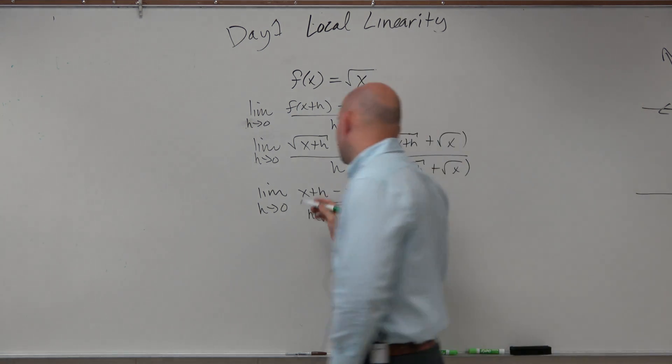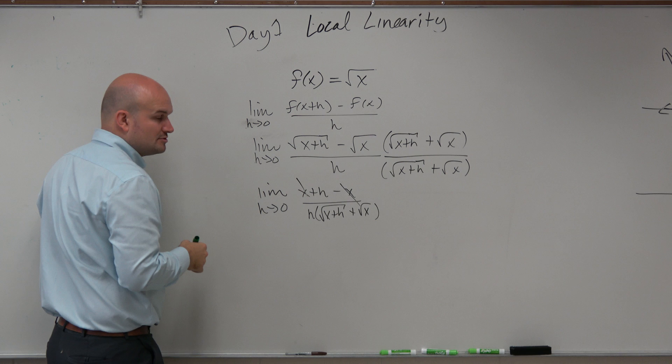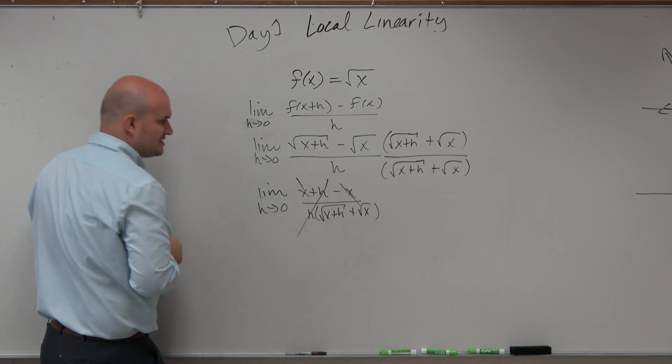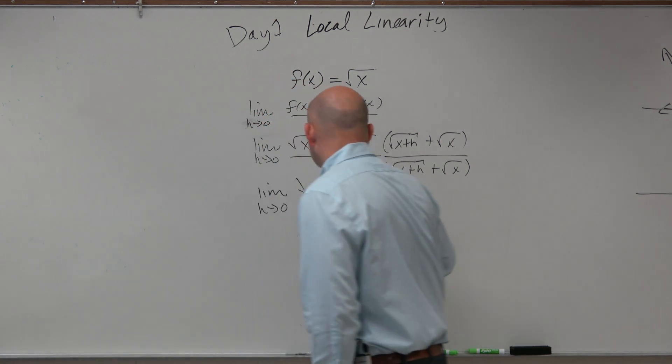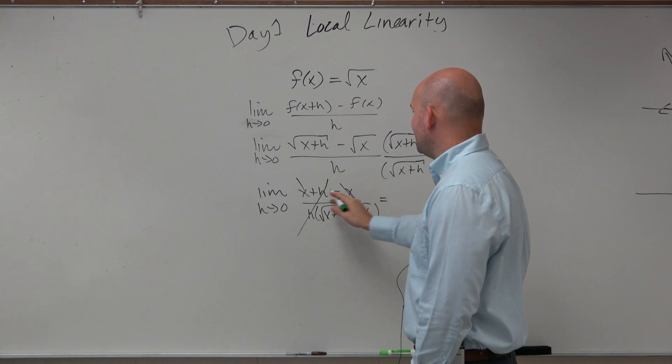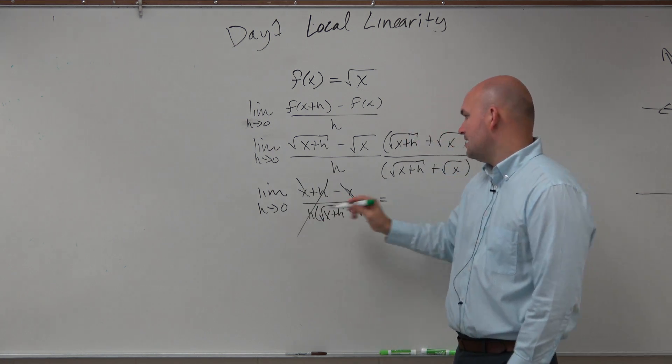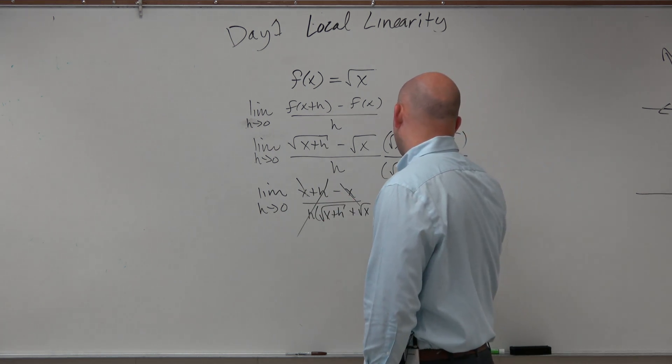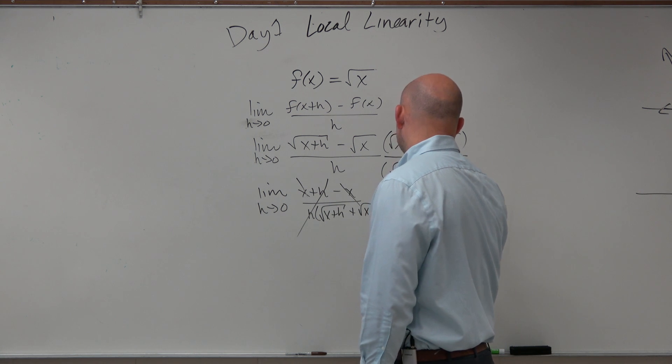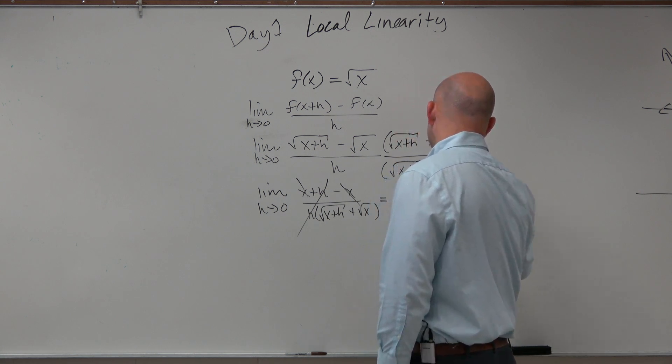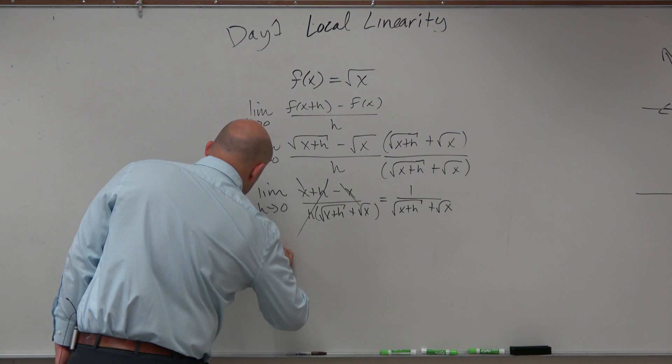So, here we see that the x's subtract to 0, the h's divide to 1, and now we can plug in, so therefore we're left with 1 over square root of x plus h plus the square root of x. Now, let's write this one more time.